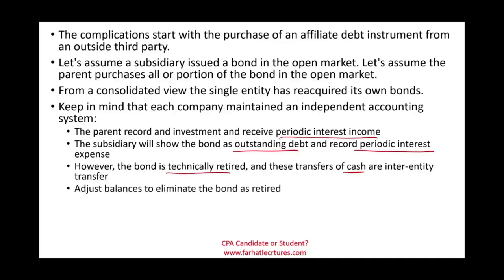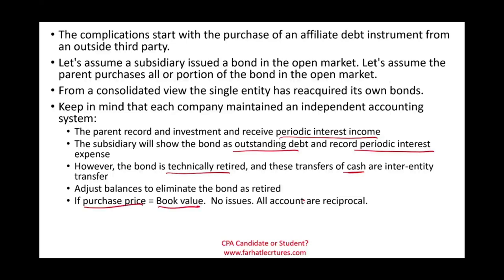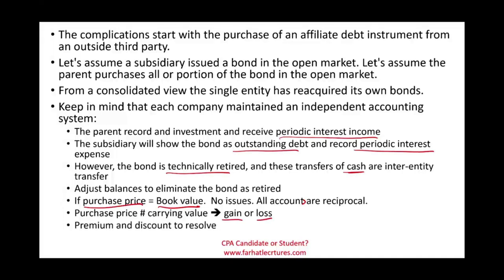We have to adjust balances to eliminate the bonds as retired. If the purchase price equals the book value, all accounts are reciprocal — same investment, same bonds payable, same interest income, same interest expense, and the same cash amount. But if the purchase price differs from the carrying value, we have a gain or loss and a premium or discount to resolve, which gets more complicated.